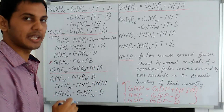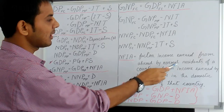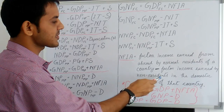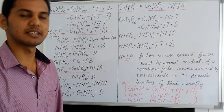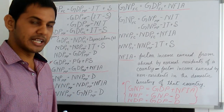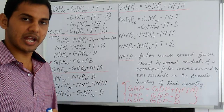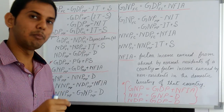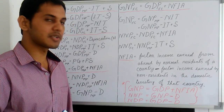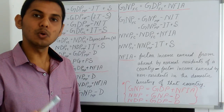NFIA equals factor income earned from abroad by normal residents of a country minus factor income earned by non-residents in the domestic territory of that country. For example, if an Indian is working in the U.S. embassy in India, his income is treated as factor income from abroad. And if an American is working in India, the income earned by him will be factor income paid abroad.